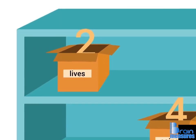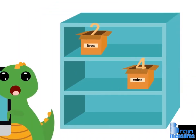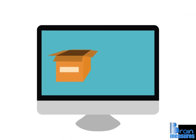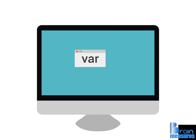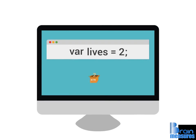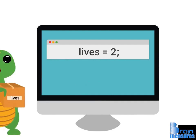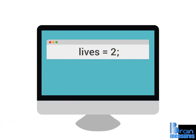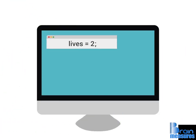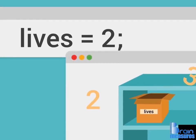This works because the variable lives already exists. But how can the computer tell the difference between an existing variable and a new variable? This is where the var instruction can help us. By using the var instruction, we can tell the computer to create a new variable. On the other hand, if we don't use the var instruction, we tell the computer to use an existing variable. In other words, the computer will browse the shelf for an existing box named lives, and then replace its content with the new value.